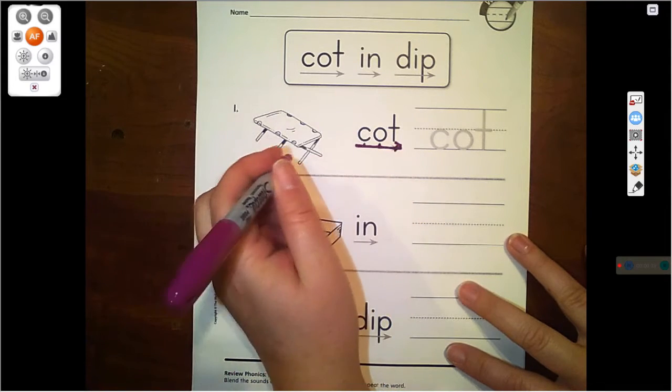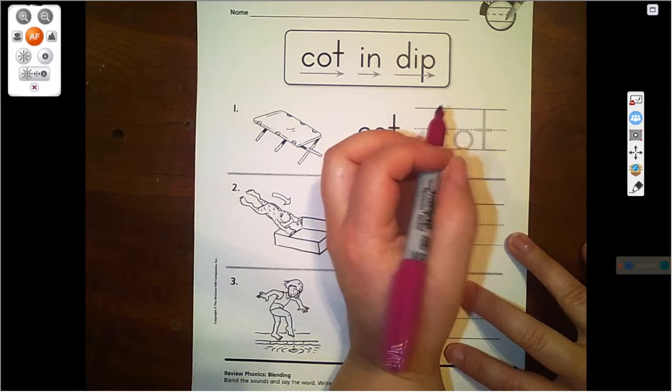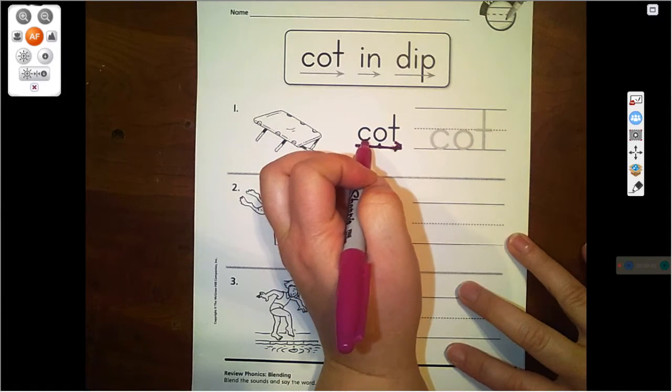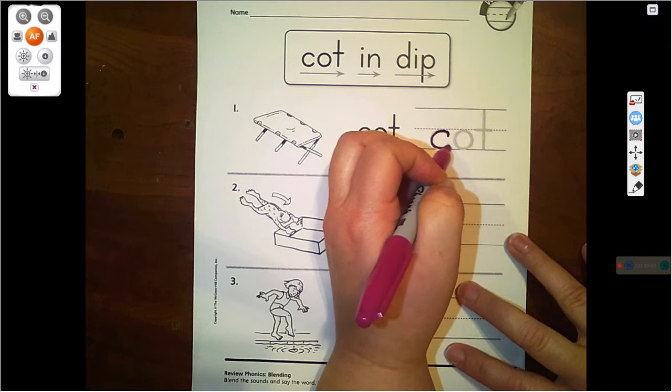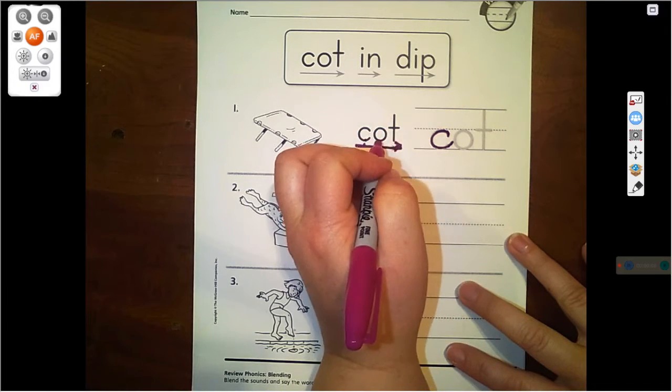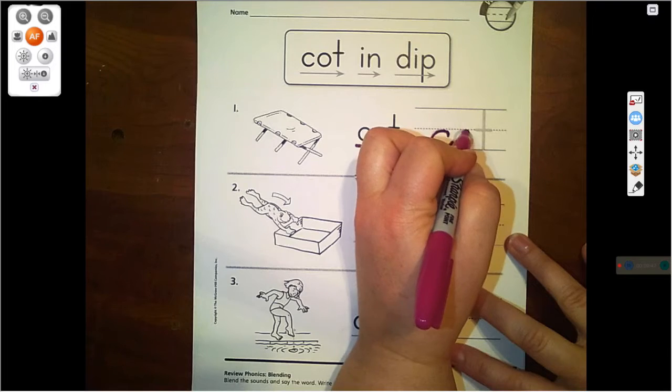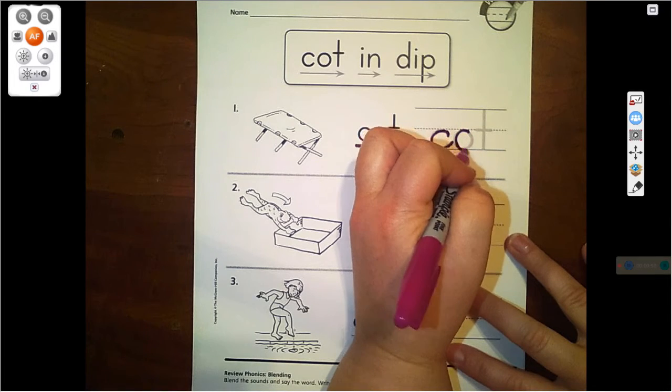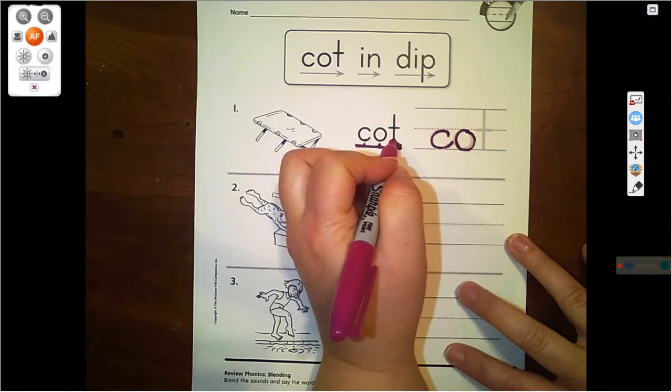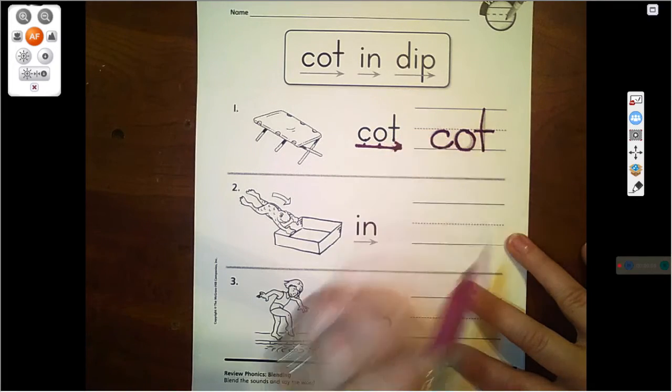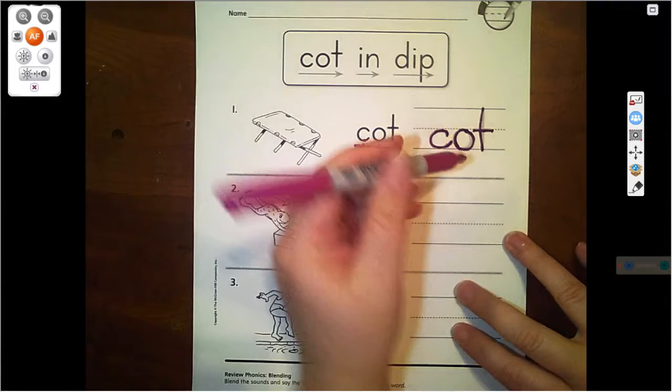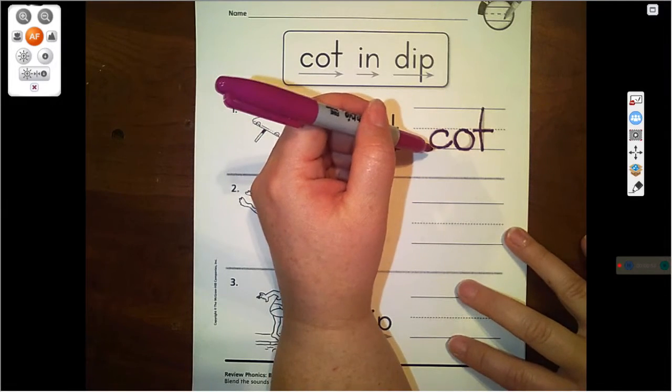A cot is like a fold-out bed. So let's write it. Our first letter is C, so we write the C. Our second letter is O, so we're going to write the O. And our last letter is T, so we write our T. And what is this word? It is the word cot.